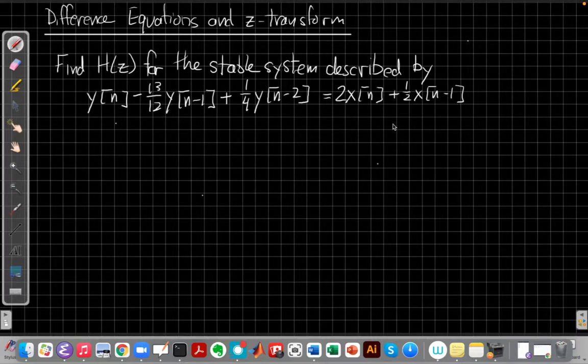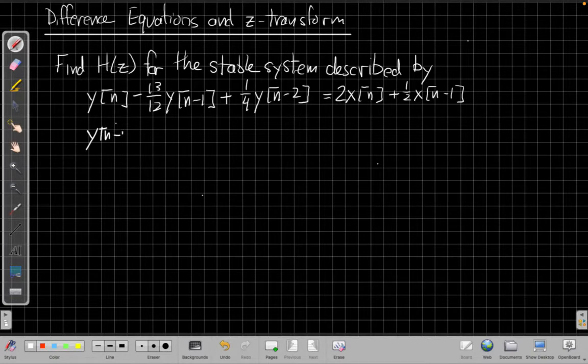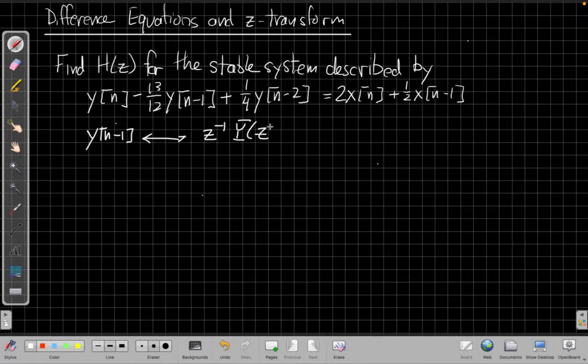So the first step is just to use the Z-transform properties going right across, the two main properties being that we want to use linearity and the delay property. Remember the delay property says that if I have say Y of N minus 1, its Z-transform is z^(-1) times Y(z). Right, when we delay in time we multiply by z^(-1).